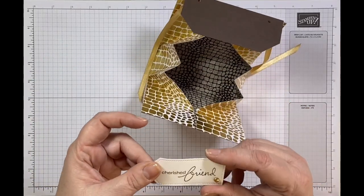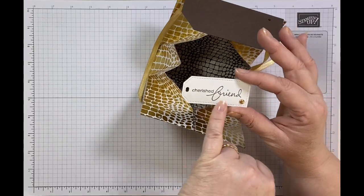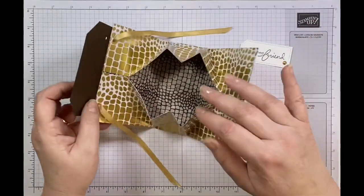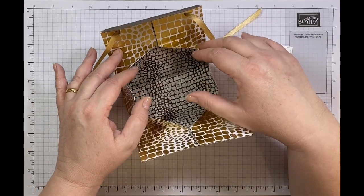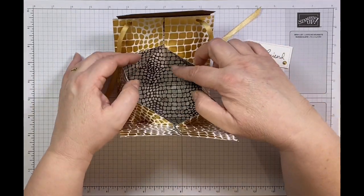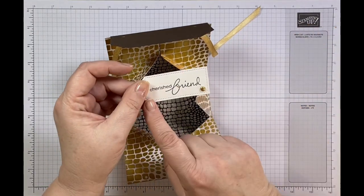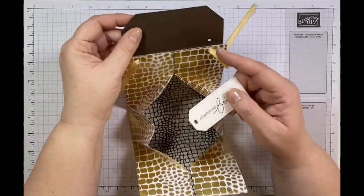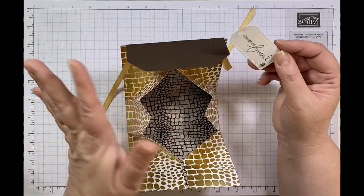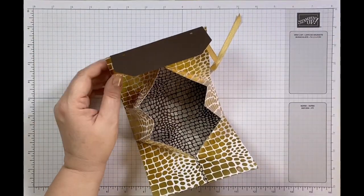I have used the beautiful stamp set called Lovely You and I've picked Cherish Friends. You can see the color inside has got this sort of snake print with the brown and the cream colors, the stone colors. So I've used the brown ink which is called Early Espresso as well and I've used the cardstock there. So it all coordinates.